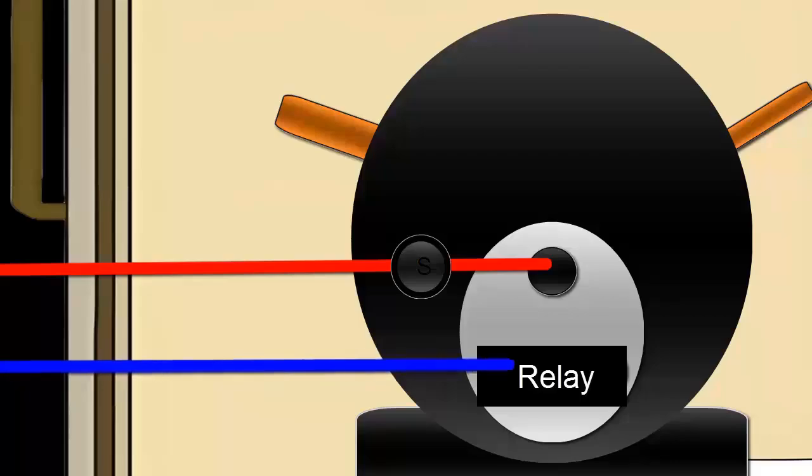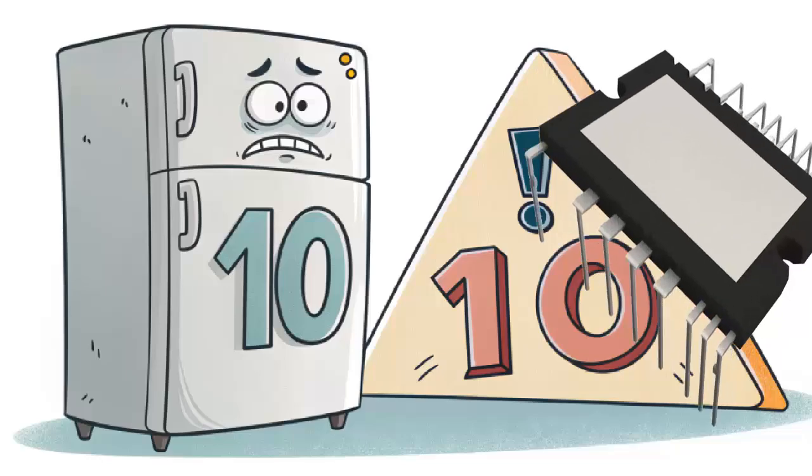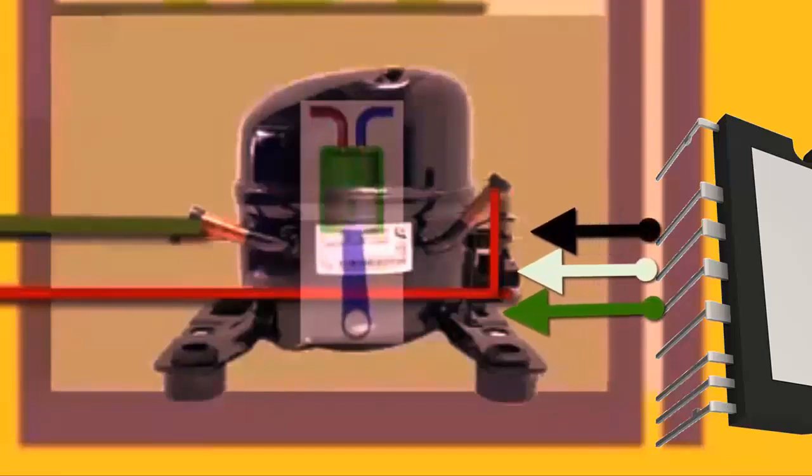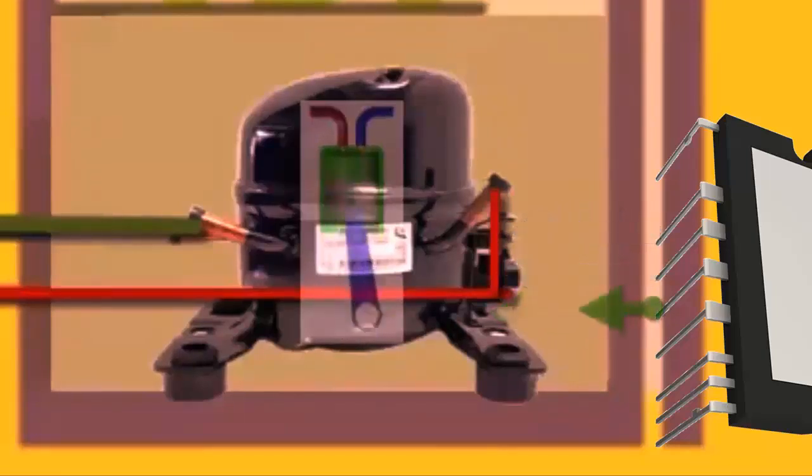10. In inverter compressors, a failure in the intelligent power module located in the electronic control board can lead to excessive current draw. This forces the electronic control system to shut off the compressor quickly for safety.